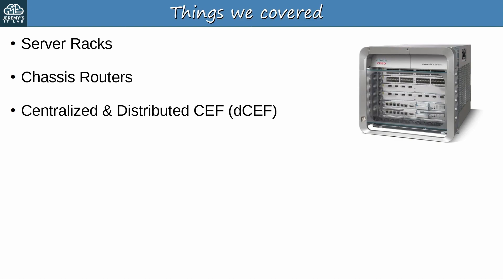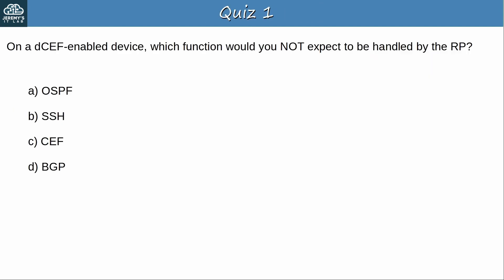Now let's go to the quiz to test your understanding of these topics. Quiz question 1: On a DCEF-enabled device, which function would you not expect to be handled by the RP? The answer is C, CEF. In distributed CEF, CEF is performed by the line cards, not the route processor card. However, the RP would be responsible for control and management functions like OSPF, SSH, and BGP.